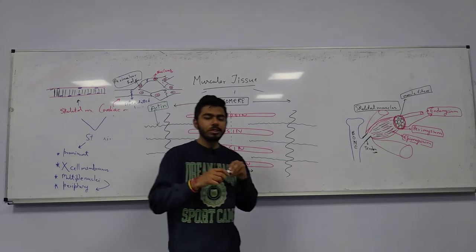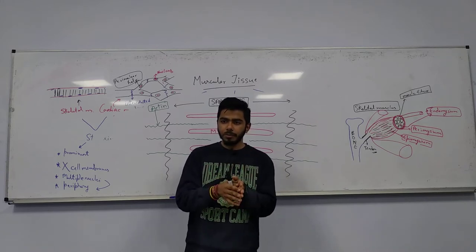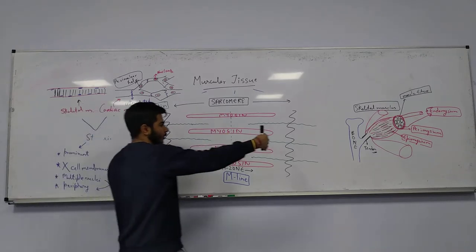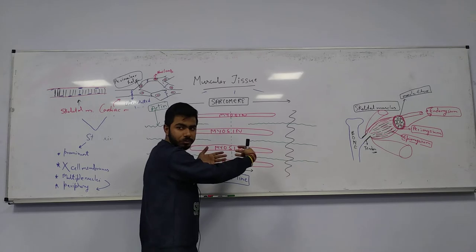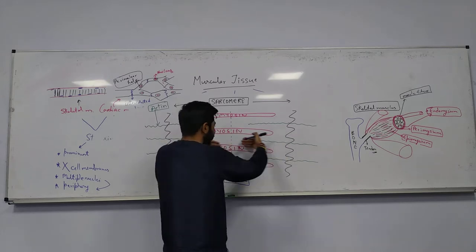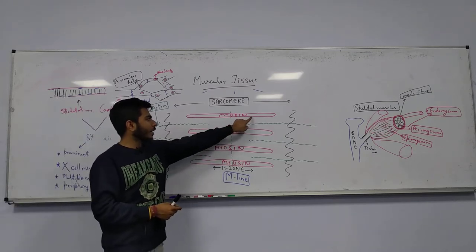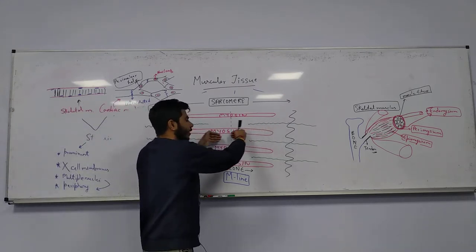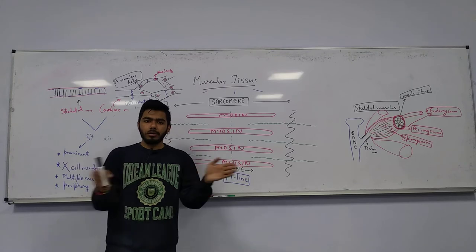Always remember: the H zone bisects the sarcomere while the skeletal muscles are contracting — there will be bisection of the sarcomere. The actin filaments will be pulled towards the center of the sarcomere by the myosin filament via cross bridging, bringing the actin filaments toward the center so that contraction may happen. The H zone bisects the sarcomere.